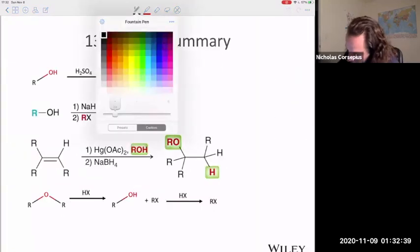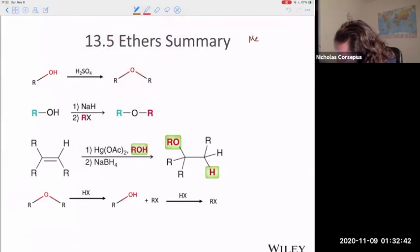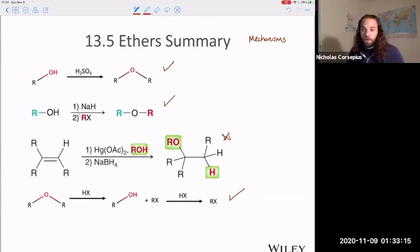So just to summarize, same sort of summary that we always do. What mechanisms do we have to know? You want to know the mechanism for the acid catalyzed formation, as well as the acid catalyzed cleavage of these ethers. And I also want you to know the mechanism for the Williamson synthesis of ethers - how we form our asymmetric ethers. You don't have to know the mechanism for the oxymercuration. It's actually called an alkoxymercuration when it's an alcohol that you use instead of water, but whatever.